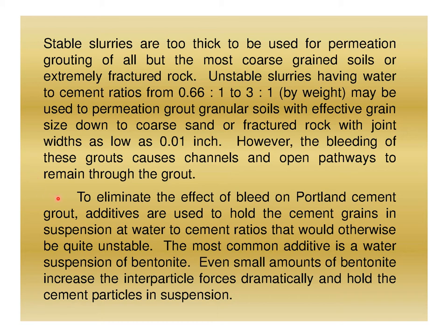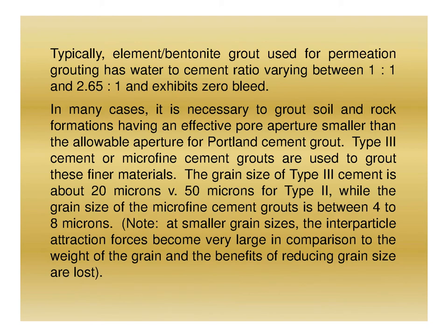To eliminate the effect of bleed on Portland cement grout, additives are used to hold cement grains in suspension at water-to-cement ratios that would otherwise be unstable. The most common effective additive is a water suspension of bentonite — even small amounts of bentonite increase interparticle forces dramatically. Typically, cement-bentonite grout used for permeation grouting has a water-to-cement ratio varying from 1:1 to 2.65:1 and exhibits 0% bleed.